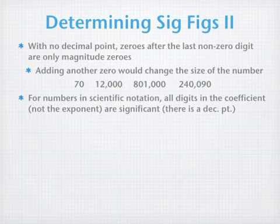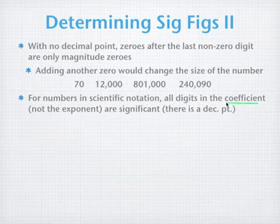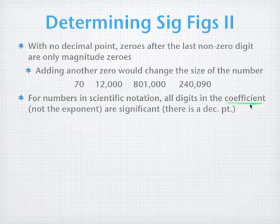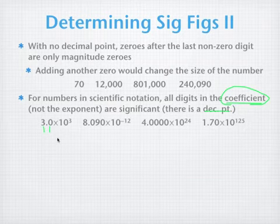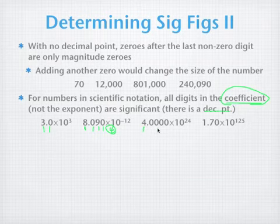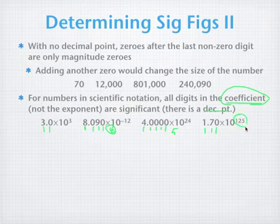Scientific notation makes things really easy. In scientific notation, all digits in the coefficient only — ignoring the exponent — are considered significant, and there is a decimal point present to help. So the first number has 2 significant figures; the second has 4 because there are 4 digits and a decimal point, so everything after the first non-zero digit counts. The third number has a 4 followed by four zeros — 5 significant figures. The last number has 3 significant figures. The size of the exponent makes absolutely no difference on the number of significant figures.